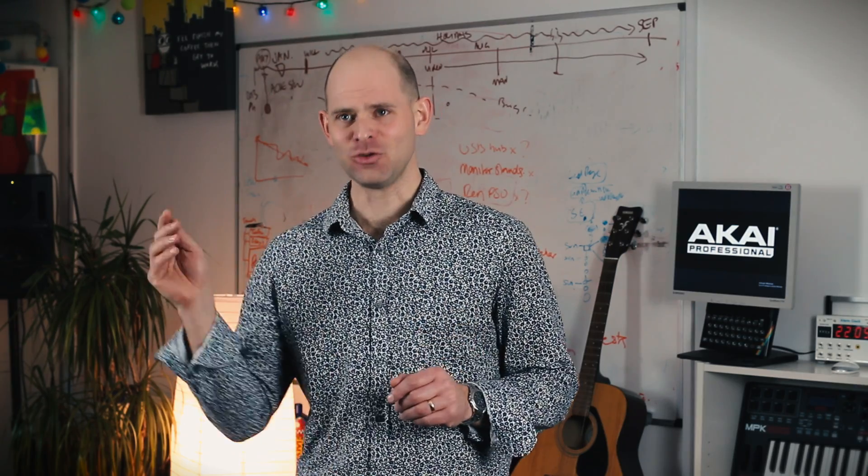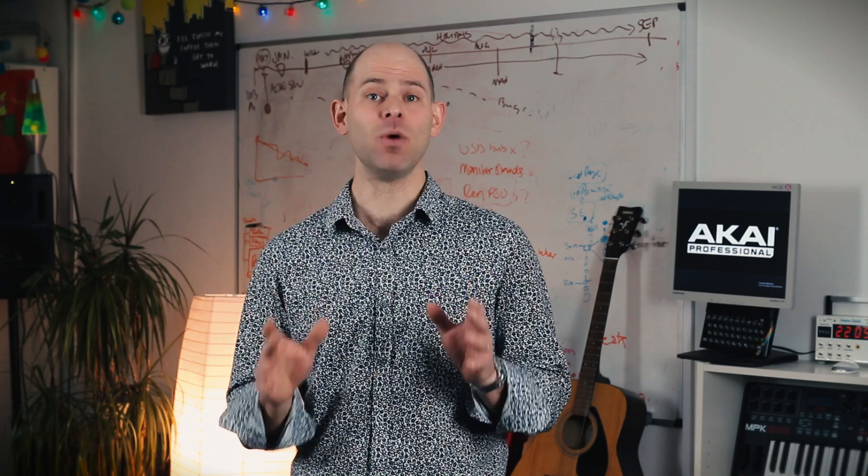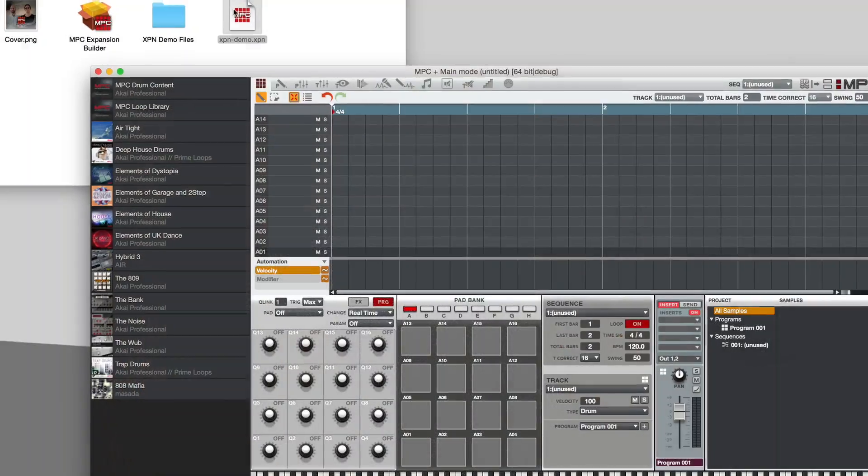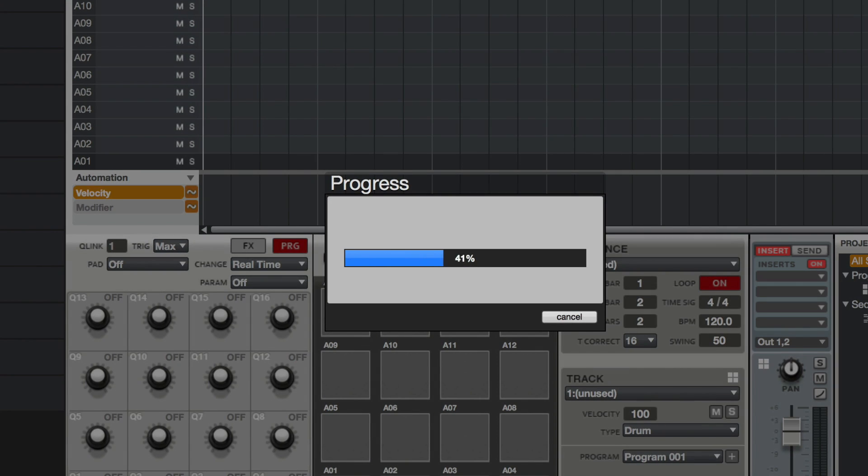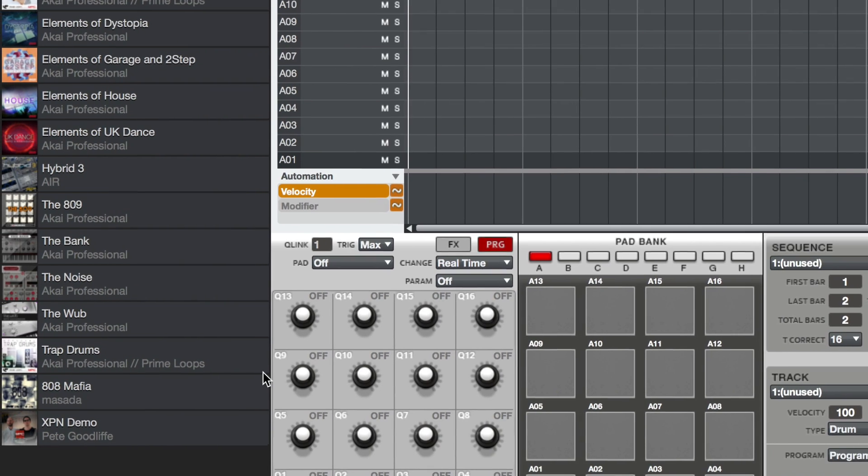Now, the fun starts when you drag that .xpn file into MPC 1.7.2. An import dialog opens with all the information about your new expansion. You can choose to install the expansion there and then from within the MPC.